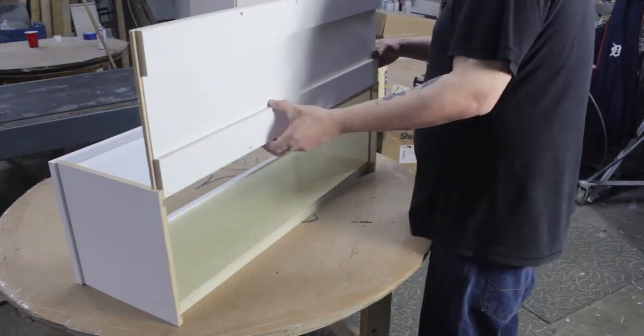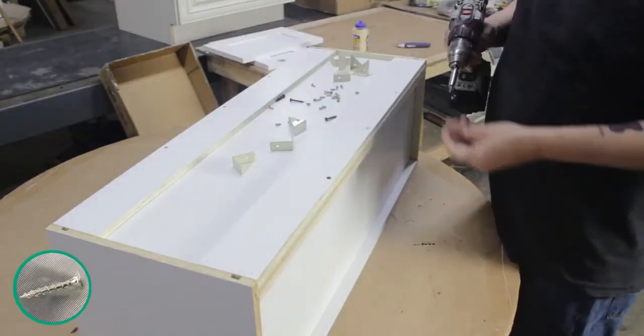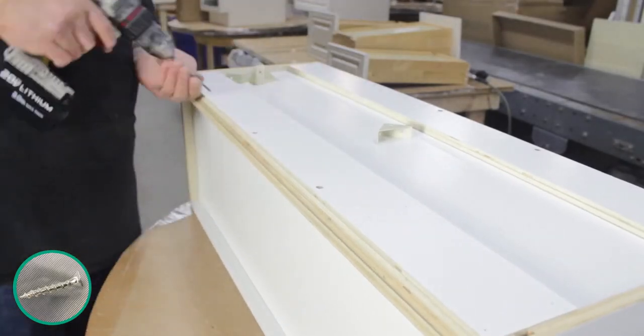Flip the cabinet upright and slide the back wall into place using the grooves on the cabinet walls. Turn the cabinet onto its front and use pre-existing holes to secure the back of the cabinet to the top and bottom lips.